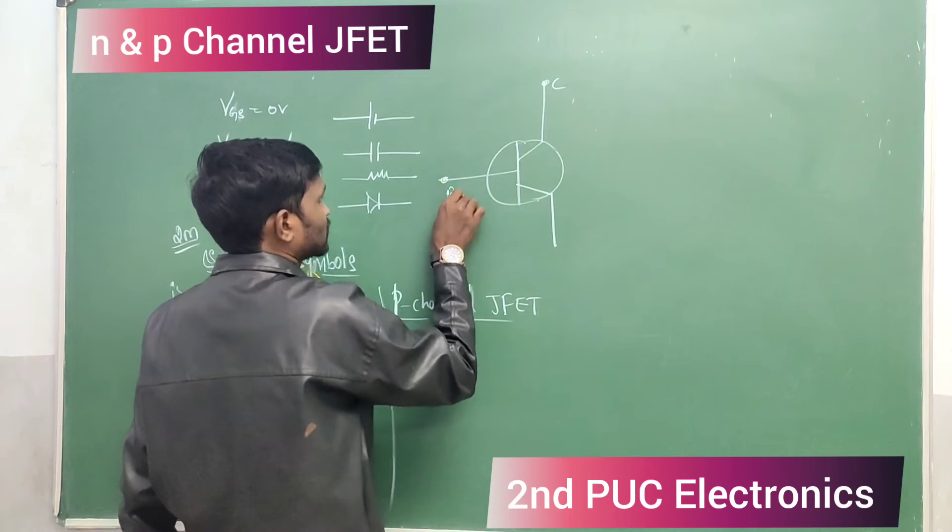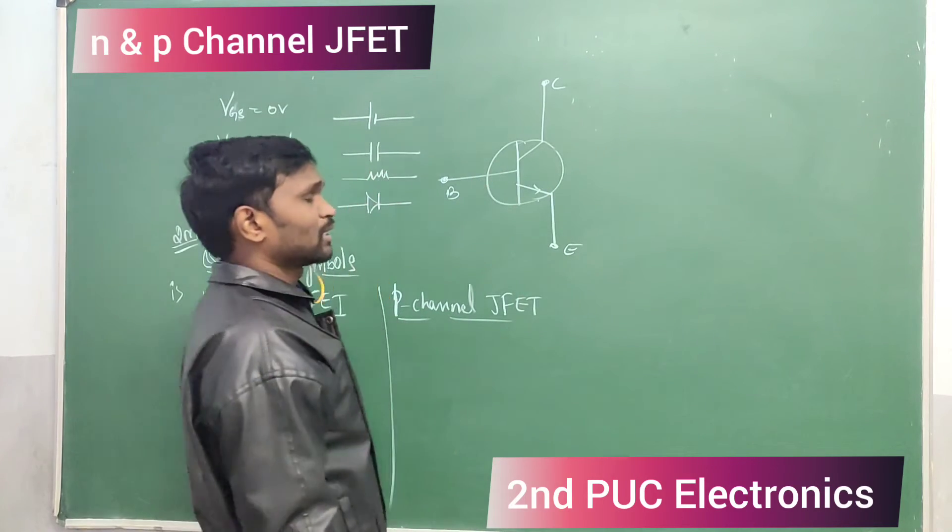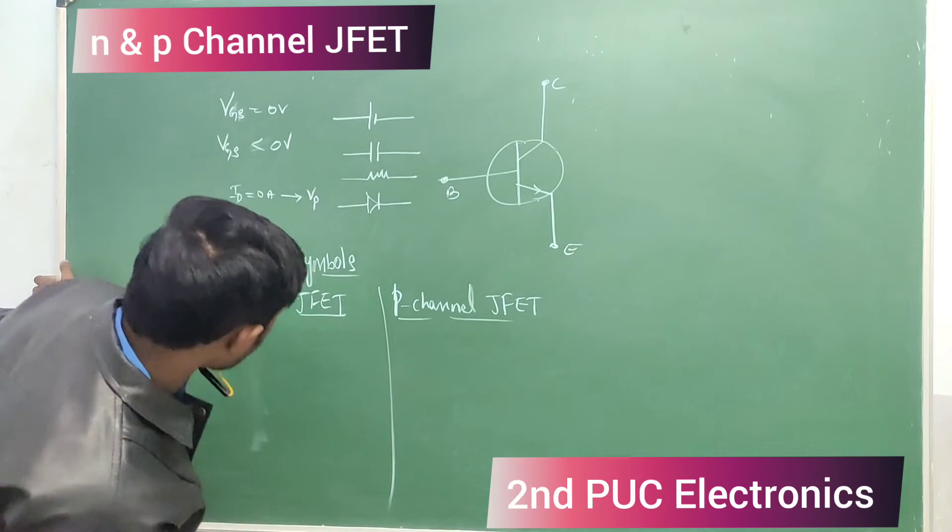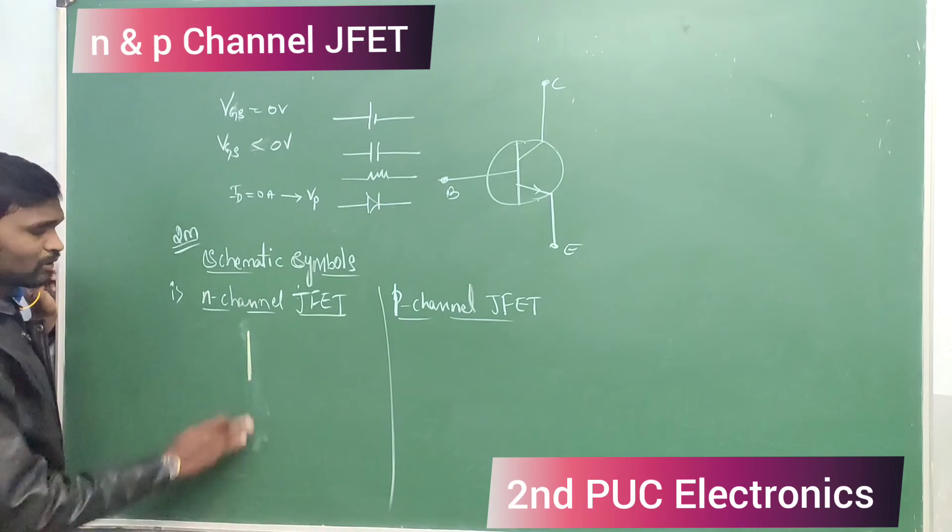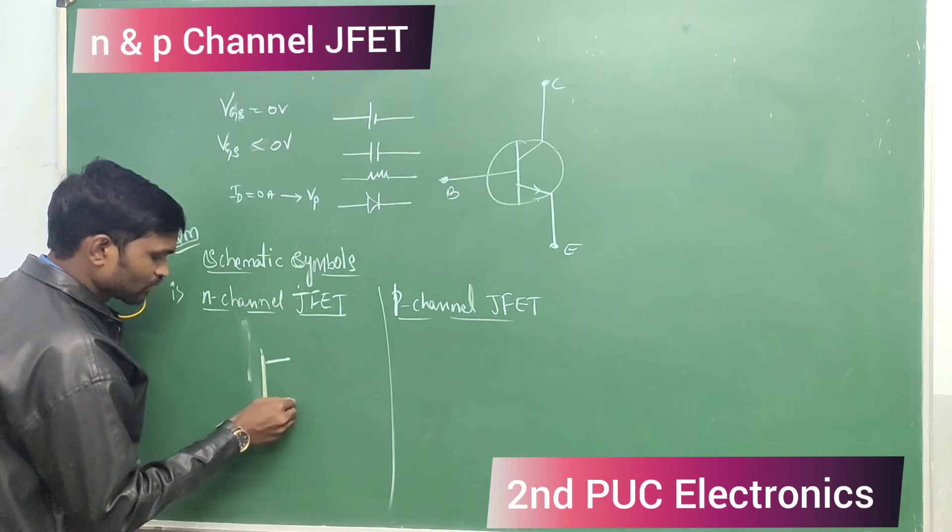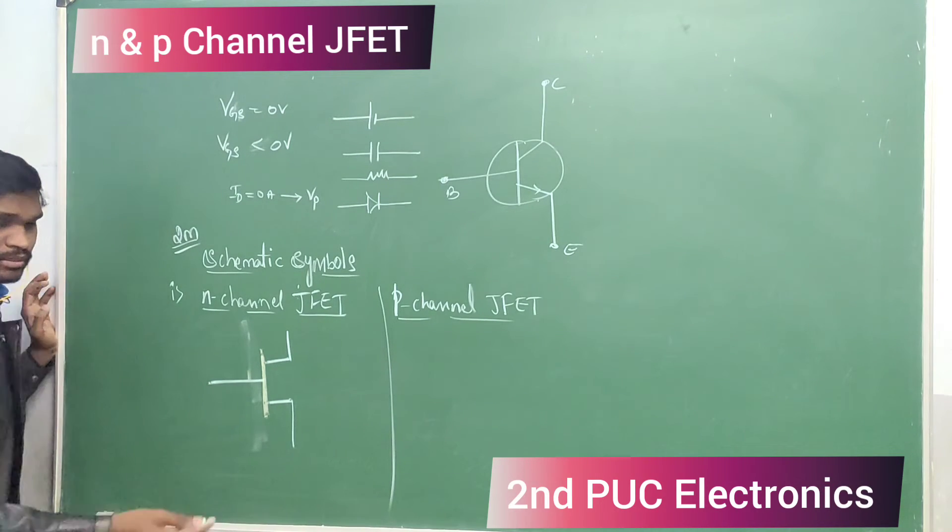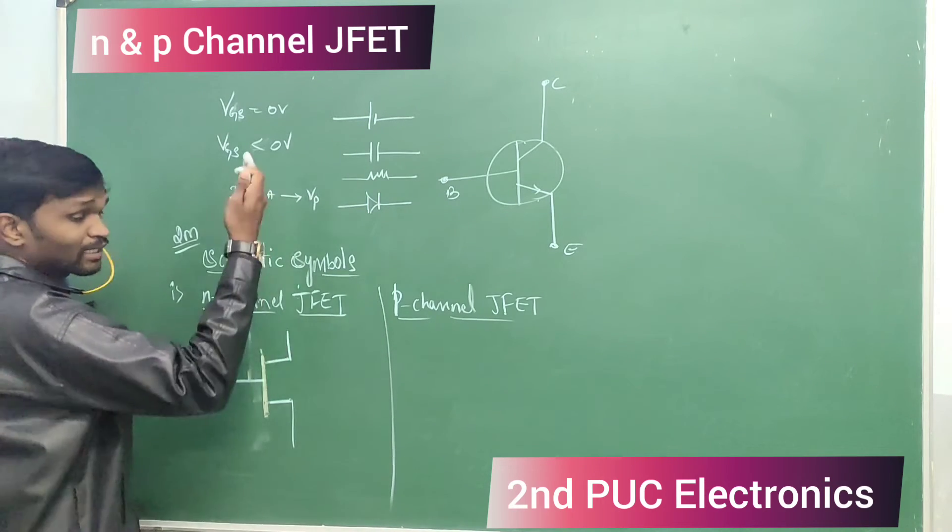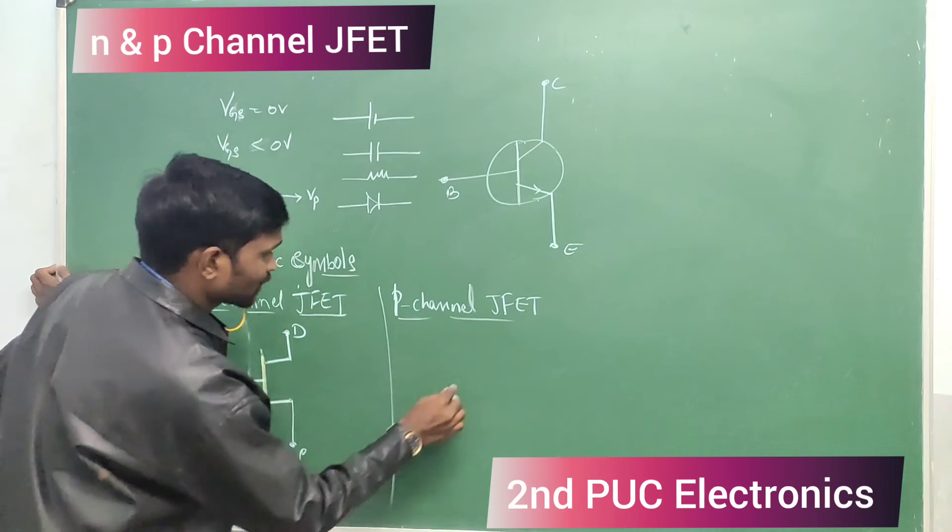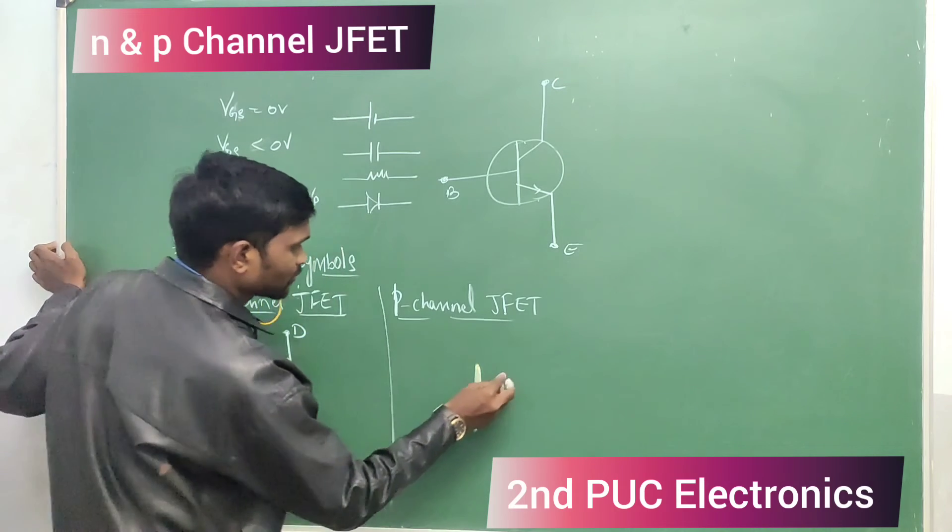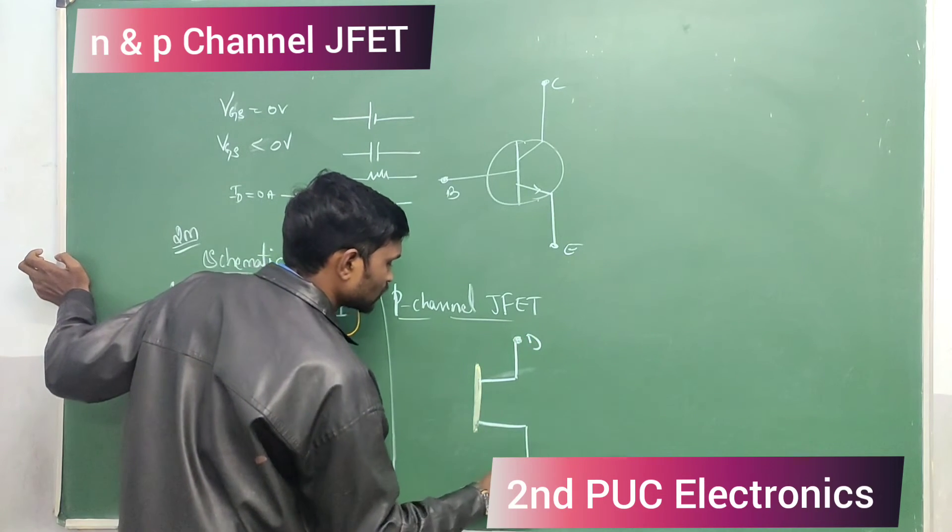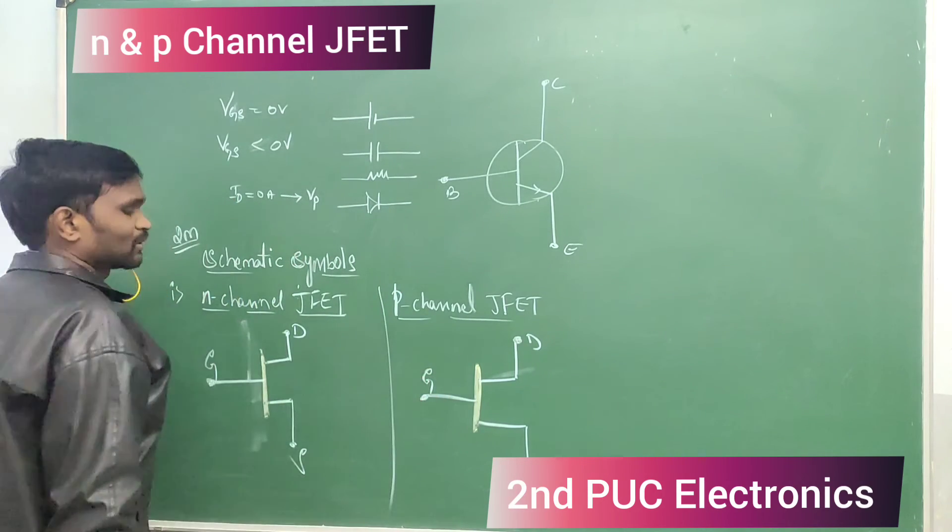Same as transistor has three terminals - base, emitter, and collector. Based on the movement of current, we can say it is NPN transistor or PNP transistor. Same thing here: three terminals. N-channel JFET has three terminals: one gate, one drain, one source. So here is the terminal, gate is common. This is your gate. This is drain and source. For P-channel, here is drain, here is source, and this is the gate.